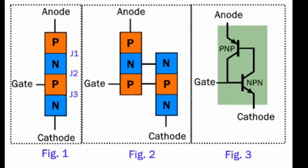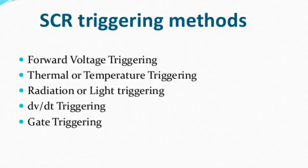Where charges are injected into the inner P layer of the device. This effectively reduces the voltage at which forward breakover occurs. Gate triggering is the most commonly used turn-on method employed to switch on the thyristors.